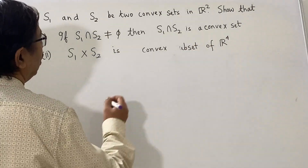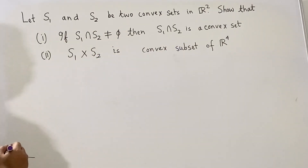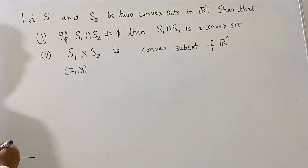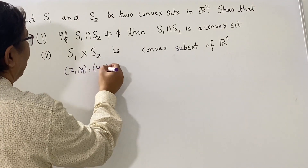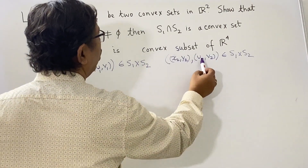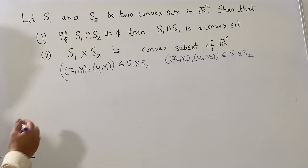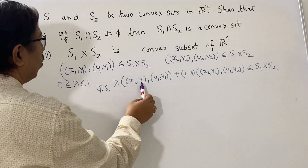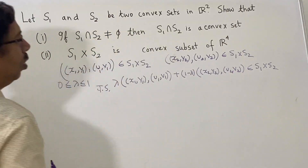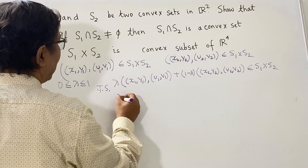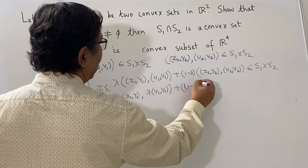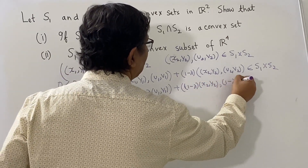Let us now go to the second part. To prove the second part, we take two points in S1 cross S2. A point in S1 looks like (x1, y1) whereas a point in S2 looks like (u1, v1), so a point in S1 cross S2 is (x1, y1, u1, v1). Let us take another point (x2, y2, u2, v2) also in S1 cross S2. We have to show that for any lambda between 0 and 1, lambda·(x1, y1, u1, v1) + (1−lambda)·(x2, y2, u2, v2) belongs to S1 cross S2. The left-hand side becomes lambda·(x1, y1) + lambda·(u1, v1) + (1−lambda)·(x2, y2) + (1−lambda)·(u2, v2).